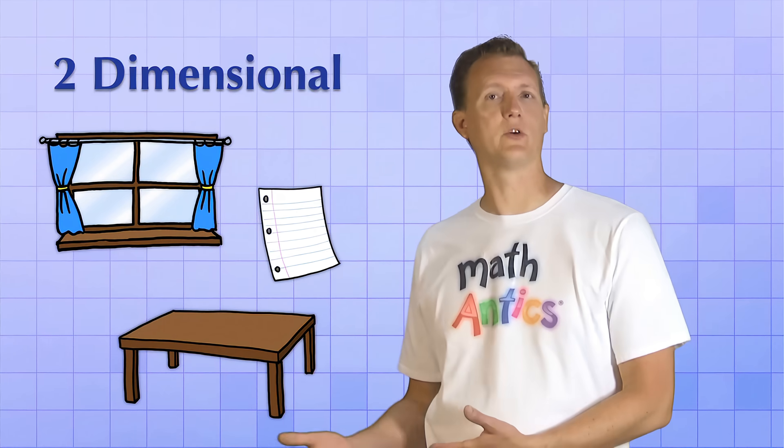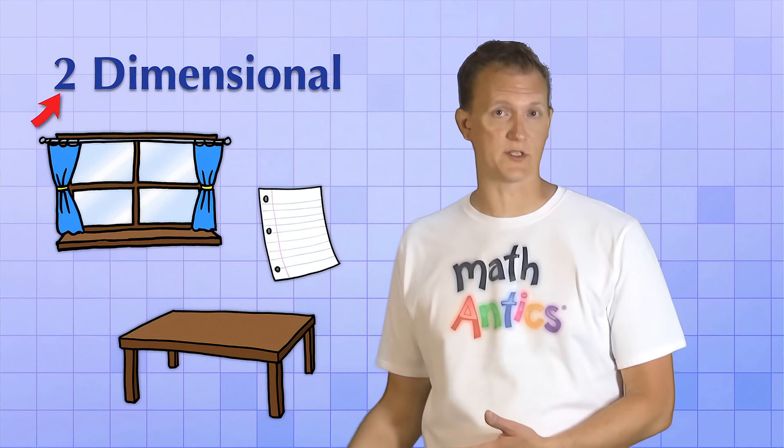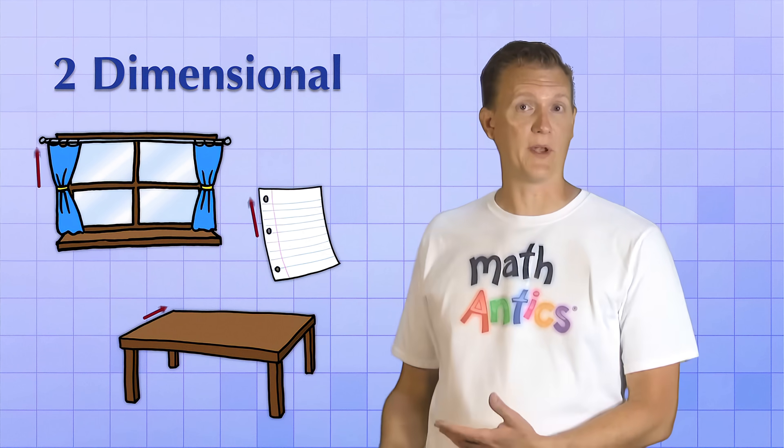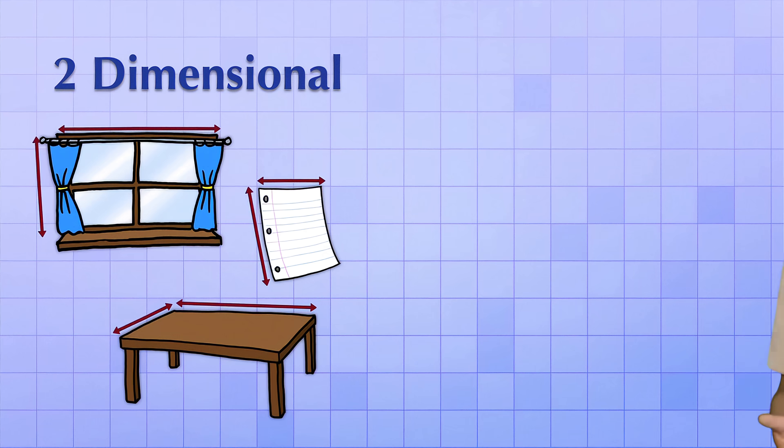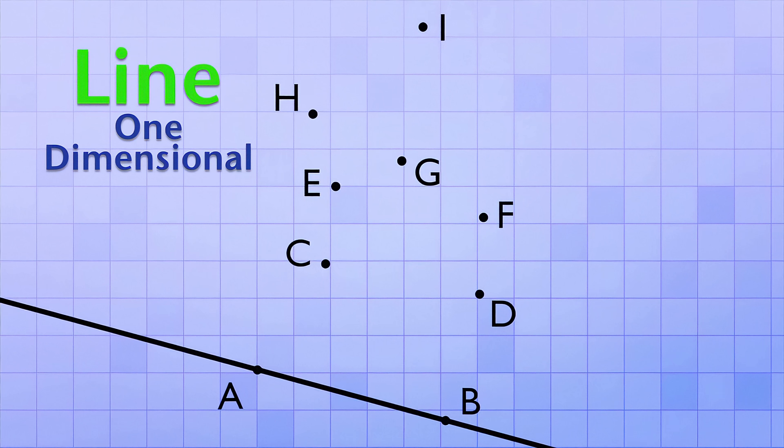A plane, or flat surface, is what we call a two-dimensional object because there's two dimensions that you can move in. You can go up and down, or you can go left and right. A line, on the other hand, is a one-dimensional object. If you're on a line, like line AB, there's only one dimension that you can travel in. Sure, you can go forwards or backwards along that line, but it still has only one dimension.